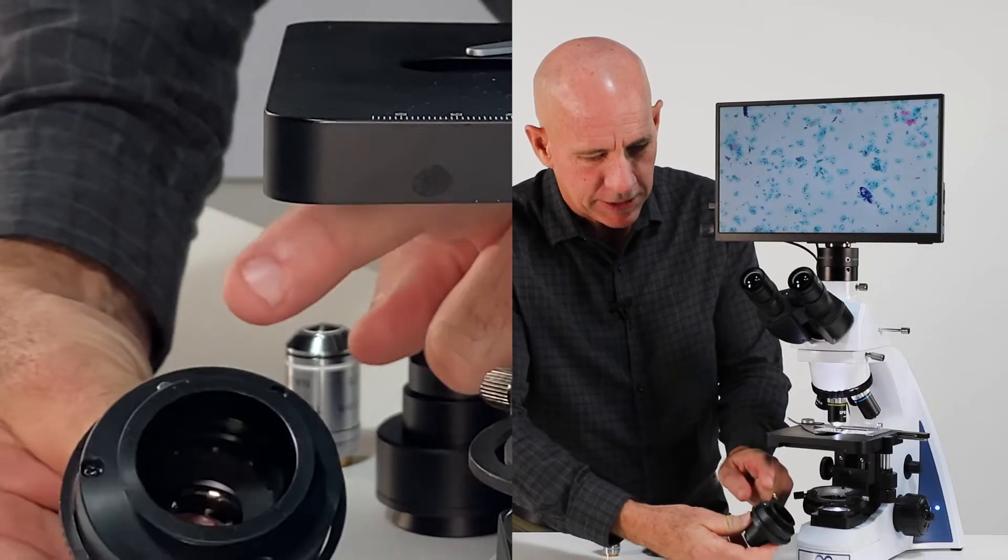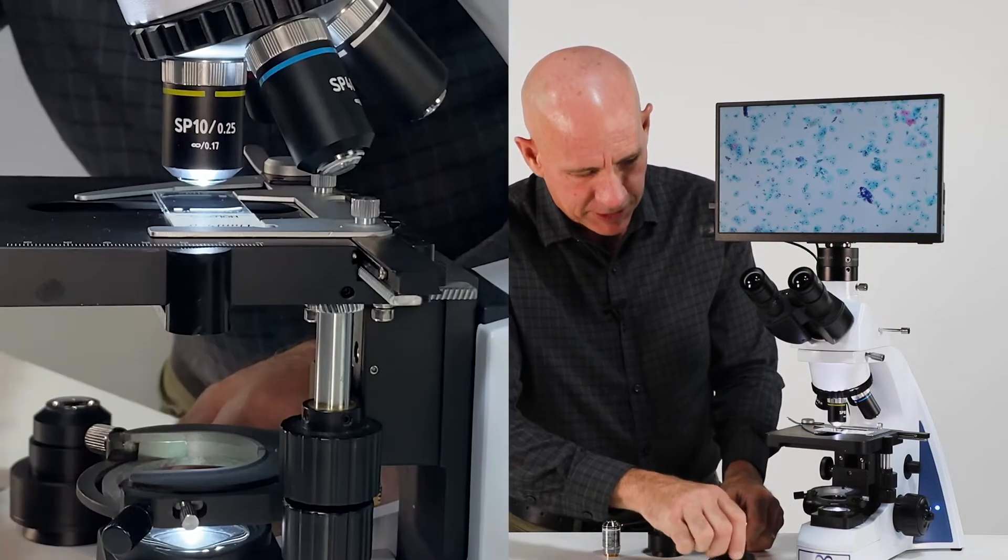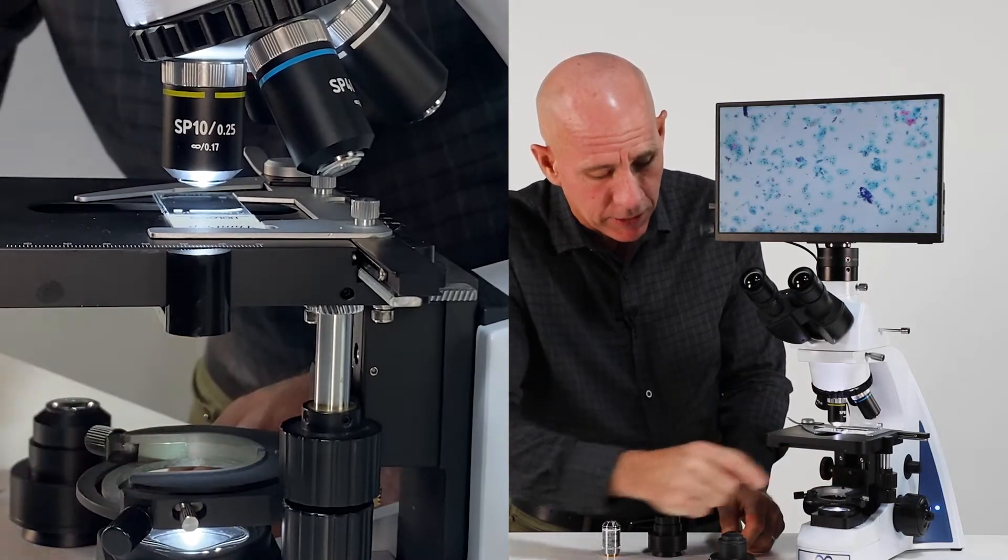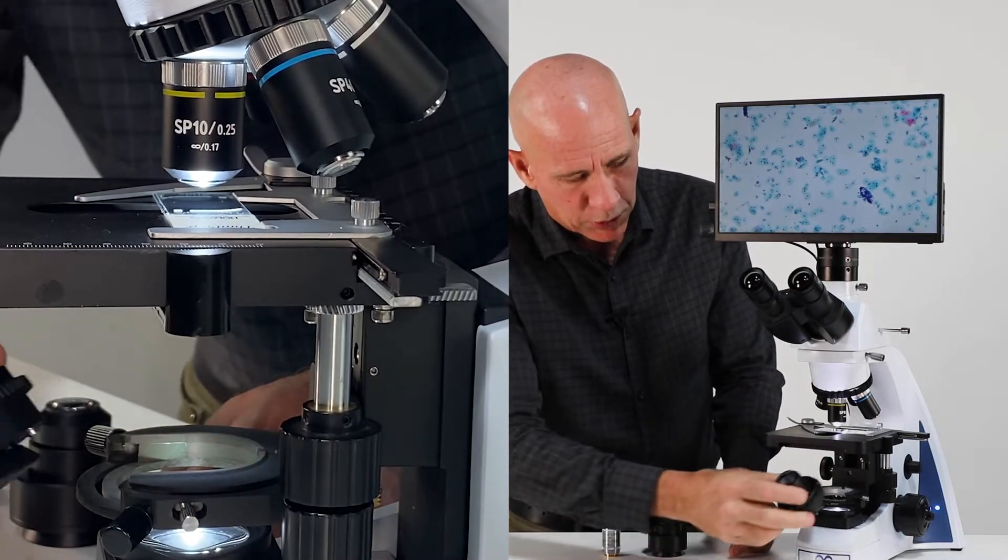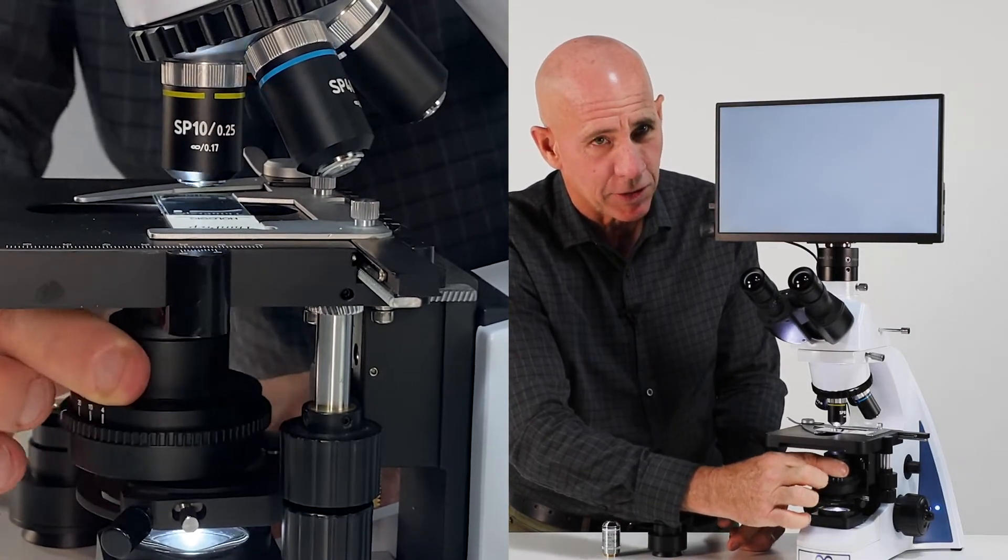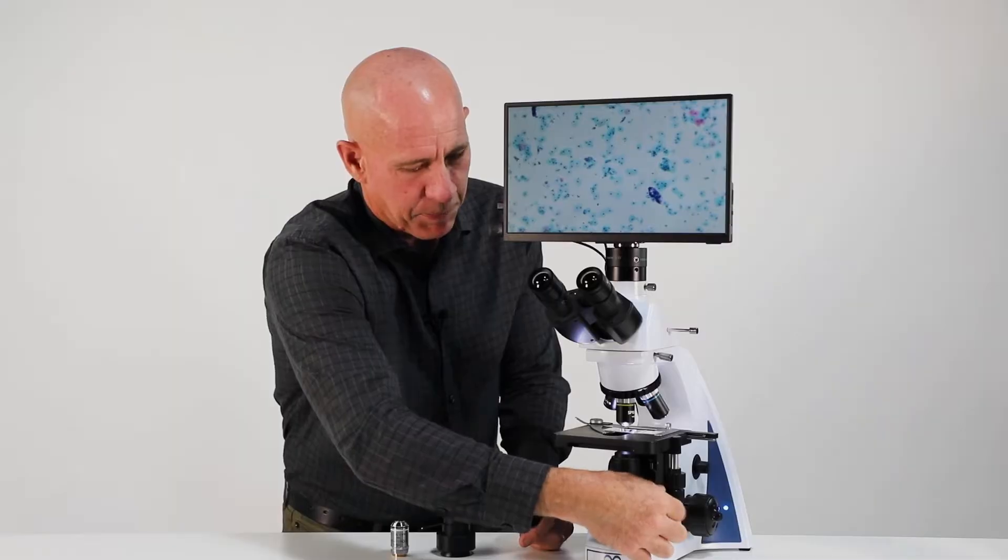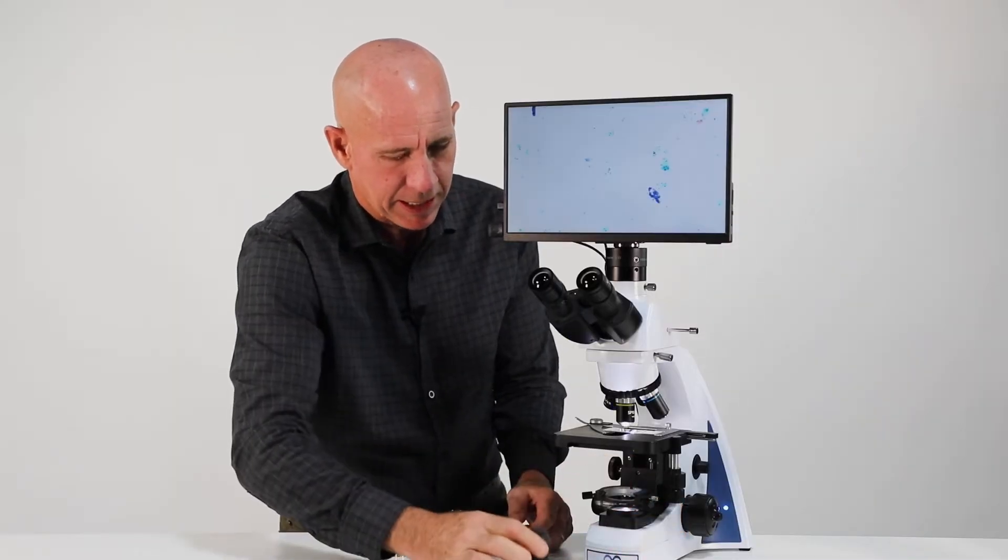Now something to notice is this condenser has a pin on it. There's a slot at the back of this carrier, so when you push in your bright field condenser you have to make sure to hit the slot. So notice I missed and now I hit, and that's how you put in your bright field.